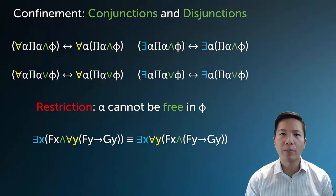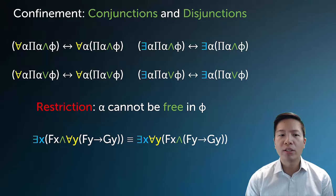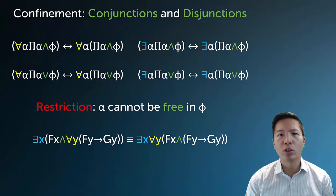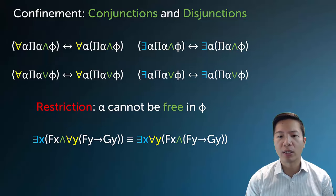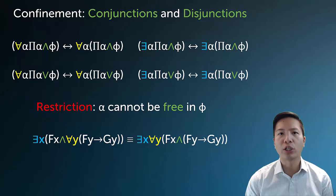Here's an example of how we use confinement for conjunction and disjunction. I've taken the universal y, which only operates over the right conjunct, and extended it over the scope of the entire sentence. In this case, these two sentences are logically equivalent.